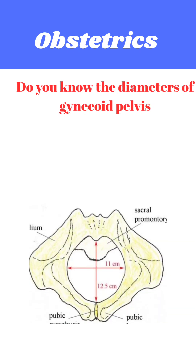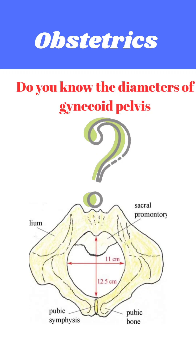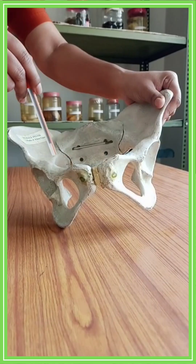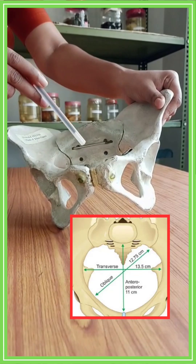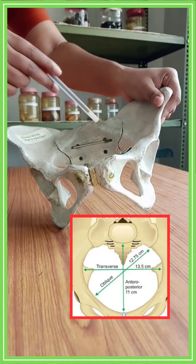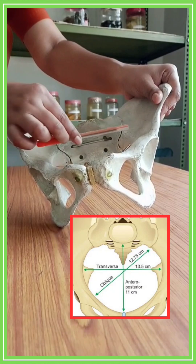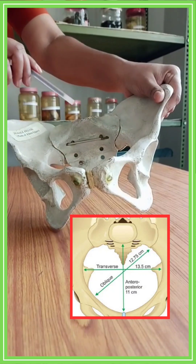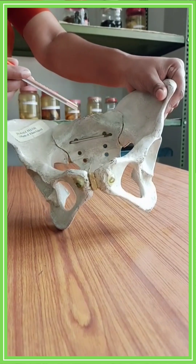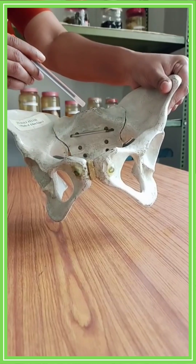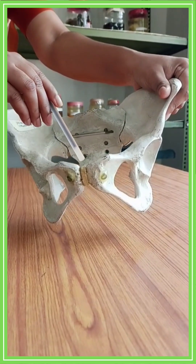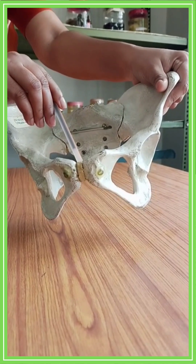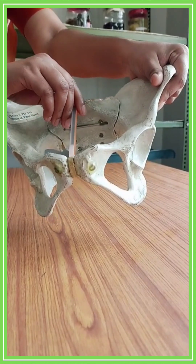Do you know the diameters of the gynecoid pelvis? At the brim, there are three diameters: the anterior-posterior diameter, the oblique diameter, and the transverse diameter. The anterior-posterior diameter of the pelvic brim extends from the sacral promontory to the upper portion of the symphysis pubis. It measures 11 cm.